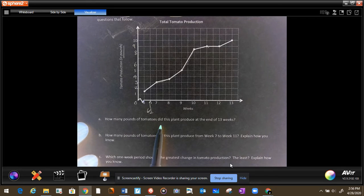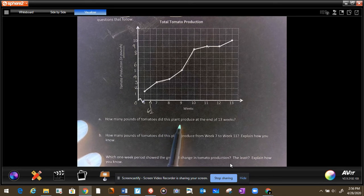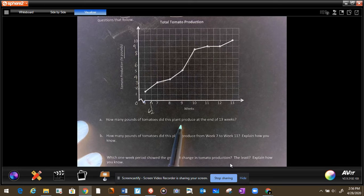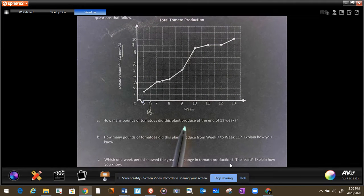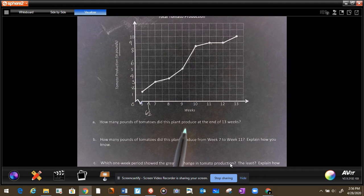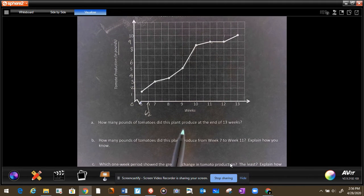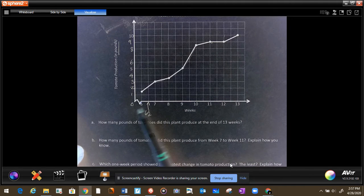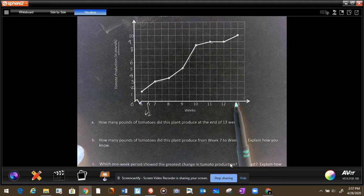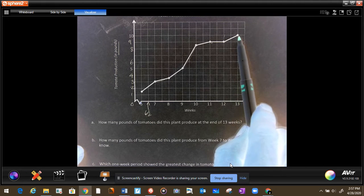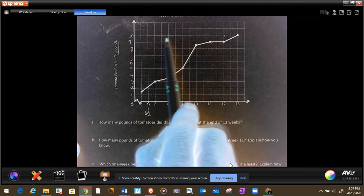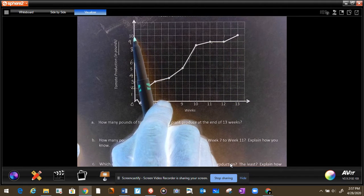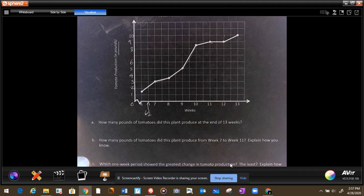How many pounds of tomatoes did the plant produce at the end of 13 weeks? Let me zoom in a little. So let's look at the end of 13 weeks. This is week 6, this is week 13. Let's look at that point there. And how many pounds did they produce? 10 pounds.